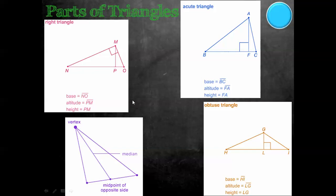We're going to talk about the parts of a triangle. Remember, this is a right triangle — it has a 90 degree angle. The base is NO. And the altitude is just the height. It goes from one of the vertices and attaches to the base at a 90 degree angle. That's the height.